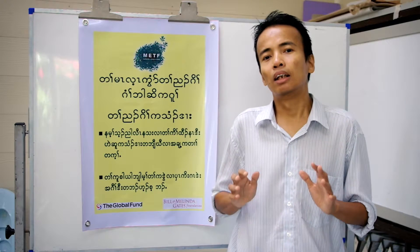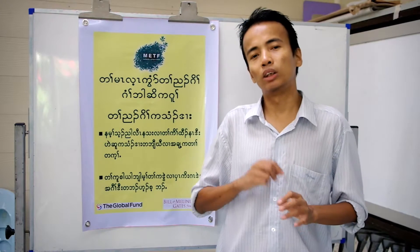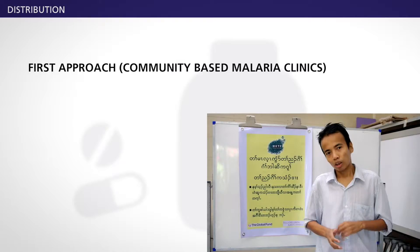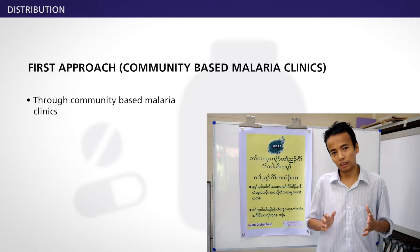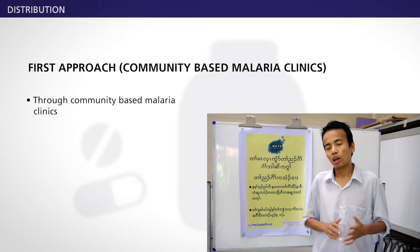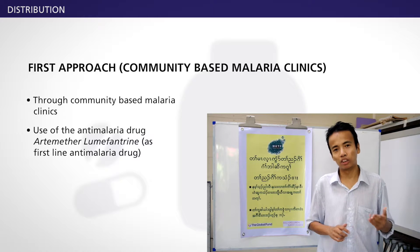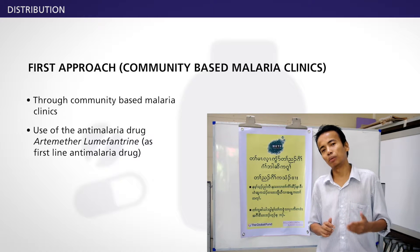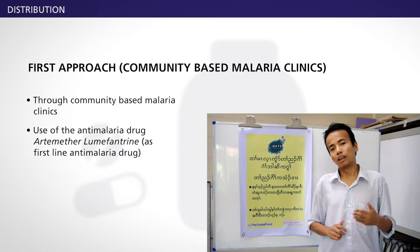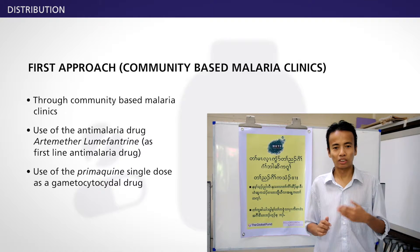So in the malaria elimination project, we distribute the anti-malaria drug in two approaches. One approach is through the community-based malaria clinics where they use the anti-malaria drug artemether-lumefantrine, which is the first-line anti-malaria drug of Myanmar, plus primaquine single dose as a gametocytocidal drug.